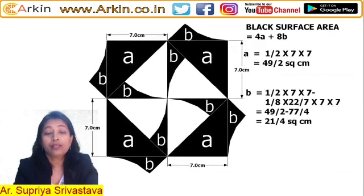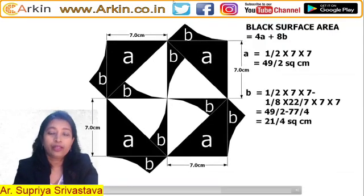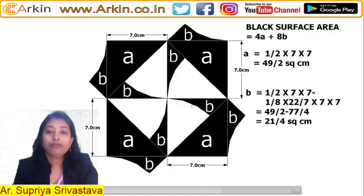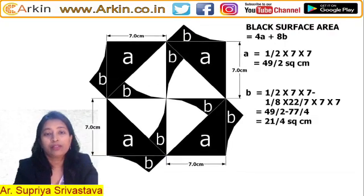B is equal to the area of the triangle minus the area of the sector. If we solve that, we find that B = 21/4 square centimeters.